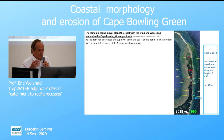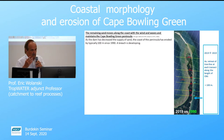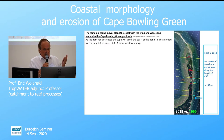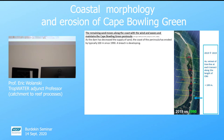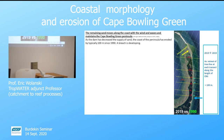What's left of the sand moves along the coast with the wind and the waves, and that's what maintains the Cape Bowling Green Peninsula. As the dam has decreased the supply of sand going to the coast, the coast of the peninsula is eroding — typically by 100 meters since 1990. This plot shows small numbers in blue on the right indicating how much the coast has retreated, and it's typically 100 meters.